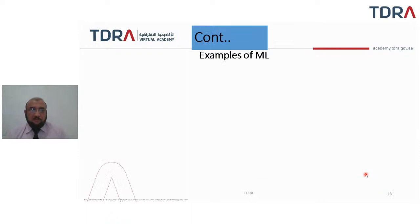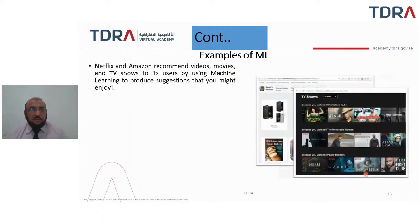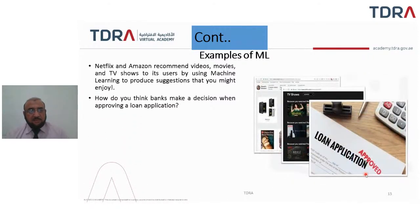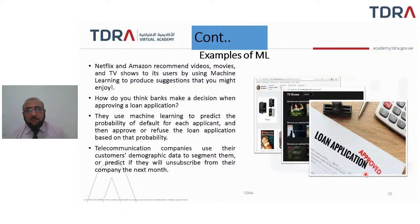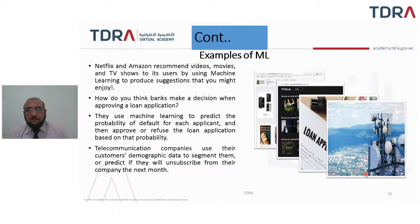Examples of machine learning include Netflix and Amazon, which recommend videos based on user interests. Banks use machine learning to check the probability of default for each loan applicant and approve or refuse applications based on that probability. Telecommunication companies use customer demographic data to predict if customers will unsubscribe from their service.